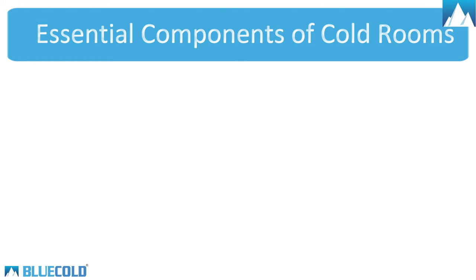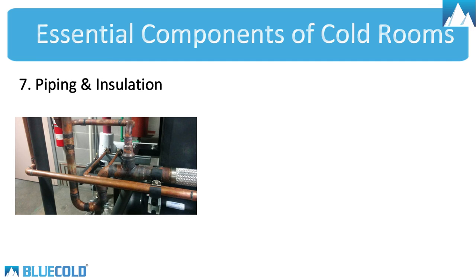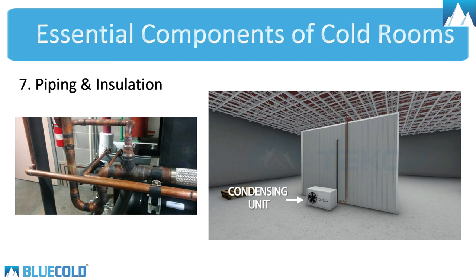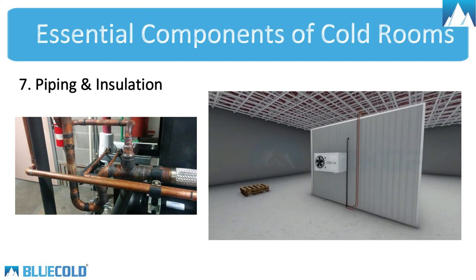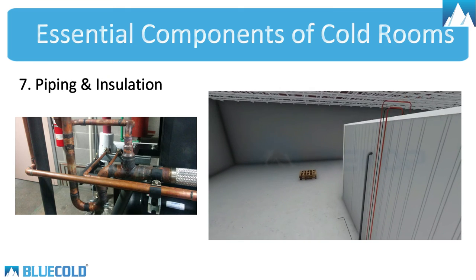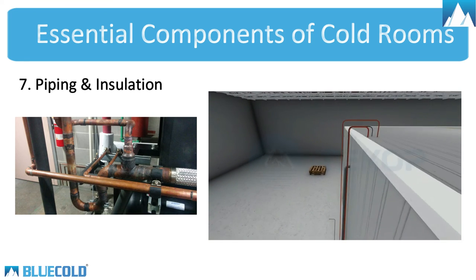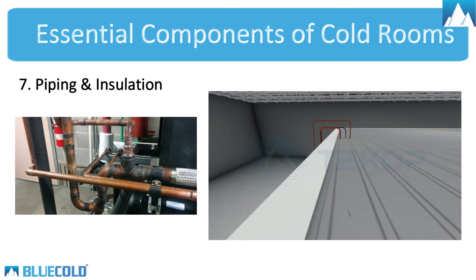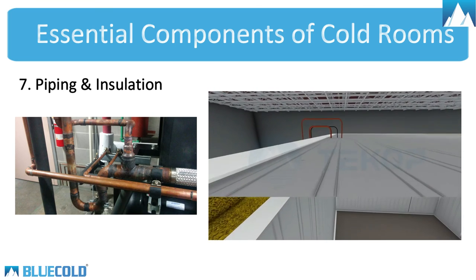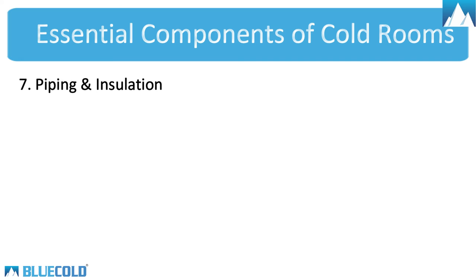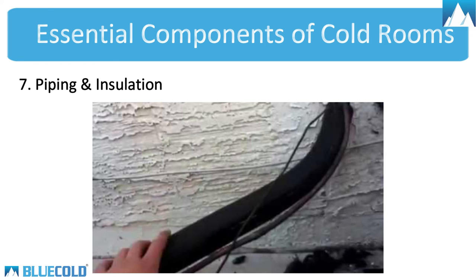7. Piping and insulation. It is responsible for carrying compressed refrigerant from the condensing unit to the evaporator and bringing back the refrigerant to the condensing unit. In order to avoid heat loss, insulation is done on the piping.